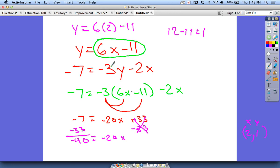I'll go negative 7 equals negative 3 times y, y is 1, so negative 3 times 1 minus 2 times x, which is 2. So if we simplify this down, it's going to be negative 7 equals negative 3 minus 4. Negative 3 minus 4 is negative 7, so that one checks out.